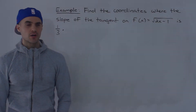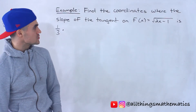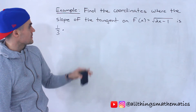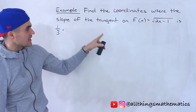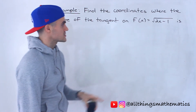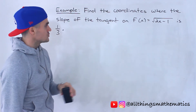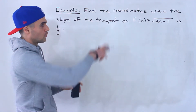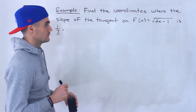What's up everyone? Patrick here. Welcome back. Moving on to the next question. We have to find the coordinates where the slope of the tangent on this function, square root of 2x minus 1, is equal to 1 over 3 — so the coordinates on that specific function.